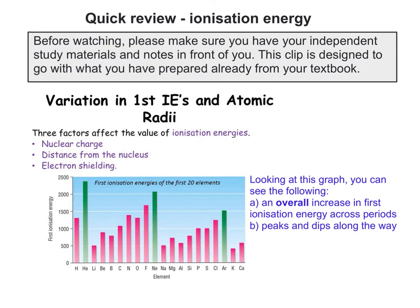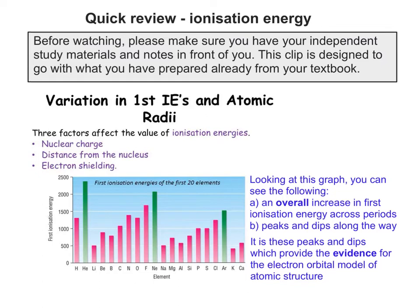So if we look at this graph of first ionisation energies, you can see an overall increase in first ionisation energy across the periods. But you can also see peaks and dips along the way, and it's these peaks and dips which are of interest, because they provide the evidence for the electron orbital model of atomic structure. So let's go into some of these peaks and troughs and try to explain what's going on.